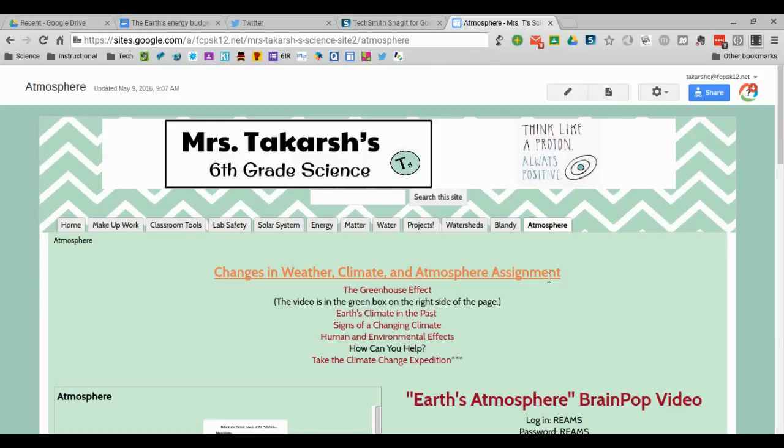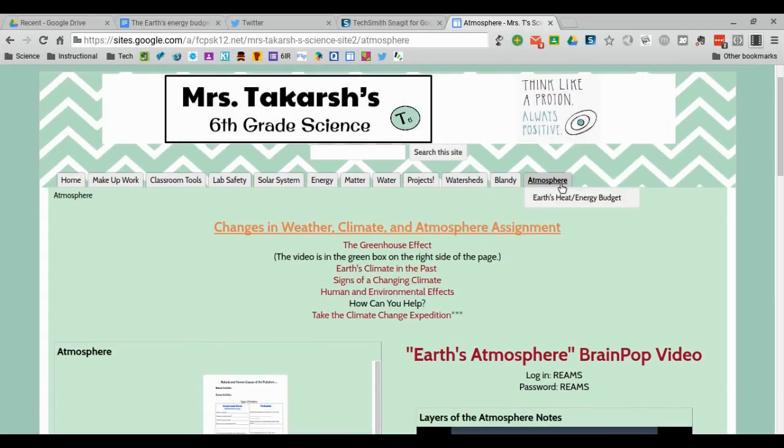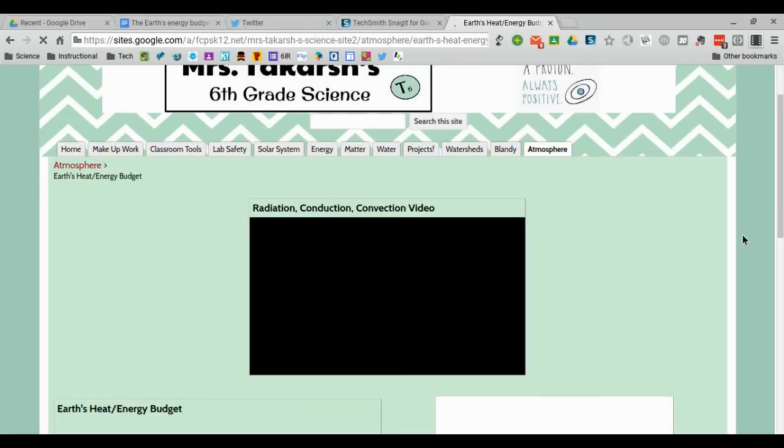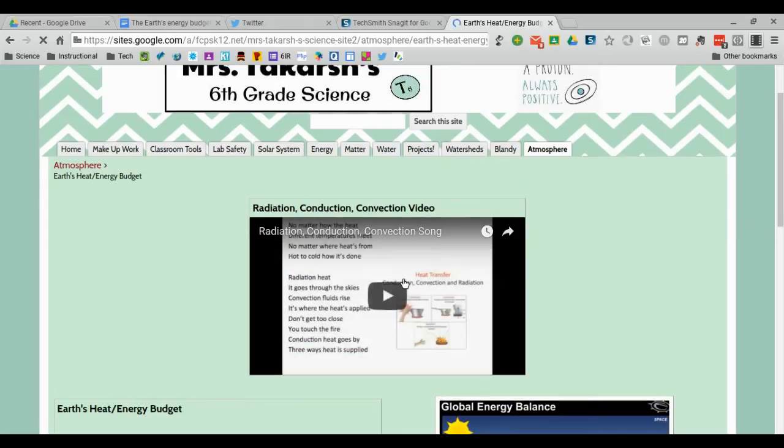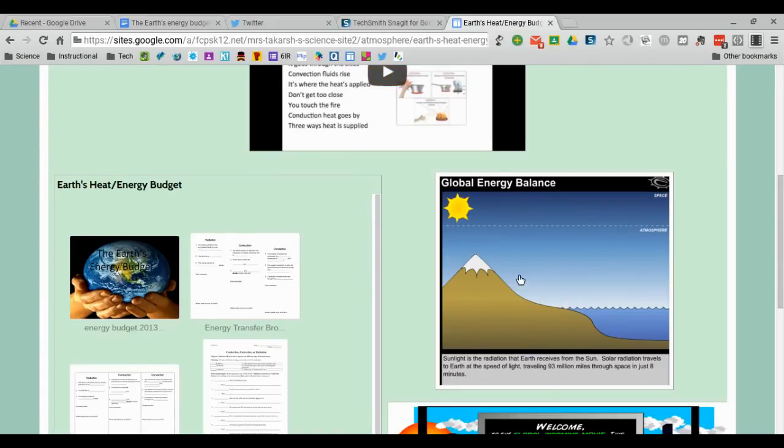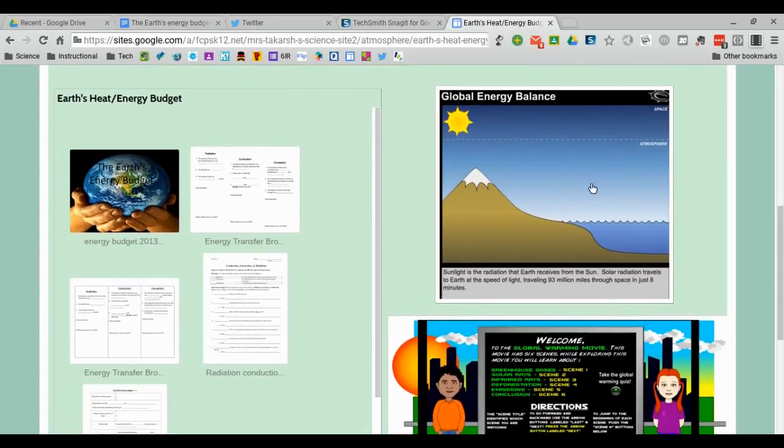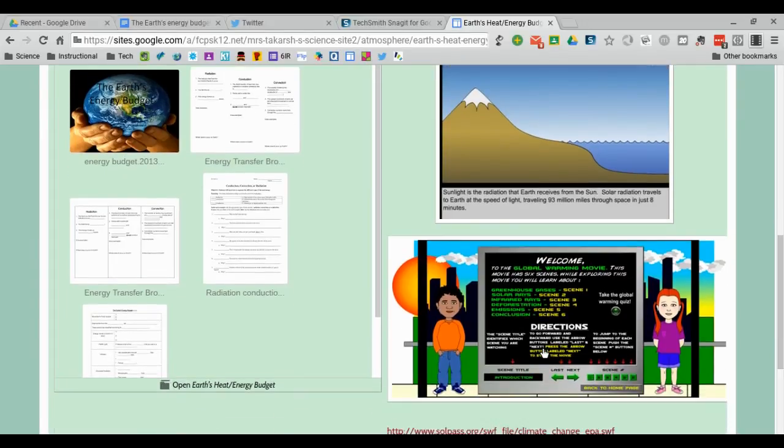The last thing I'd like you to do is to go to our science website, go to atmosphere, and the tab that says Earth's heat and the energy budget. I'd like you to take a second and to watch the radiation, conduction, and convection video. And then scroll down and do both of the interactives, the Global Energy Balance Interactive and the Global Warming Movie activity.